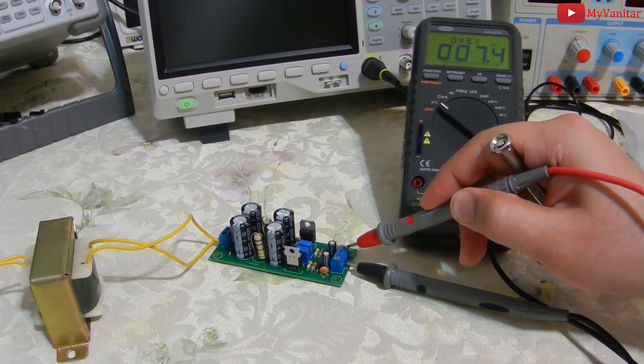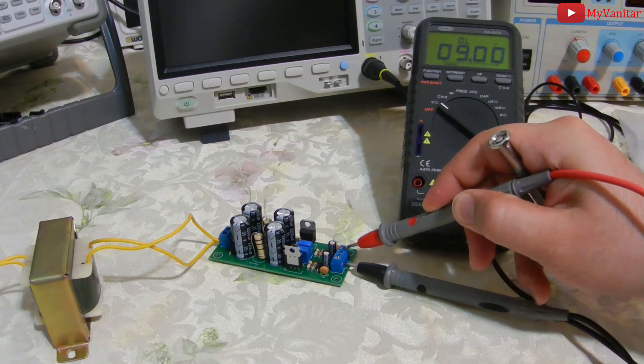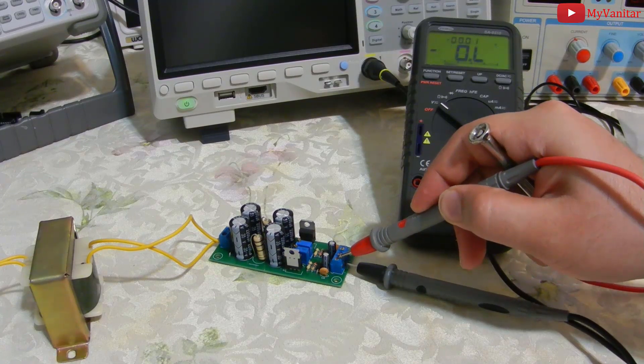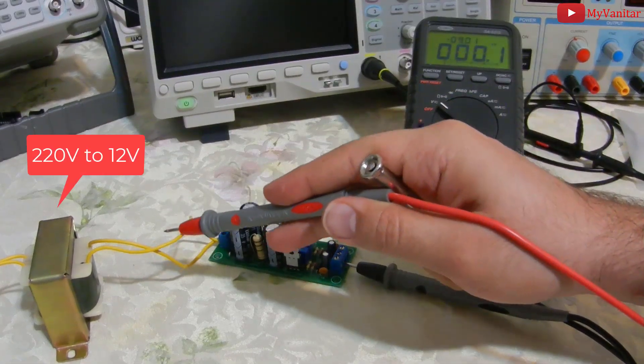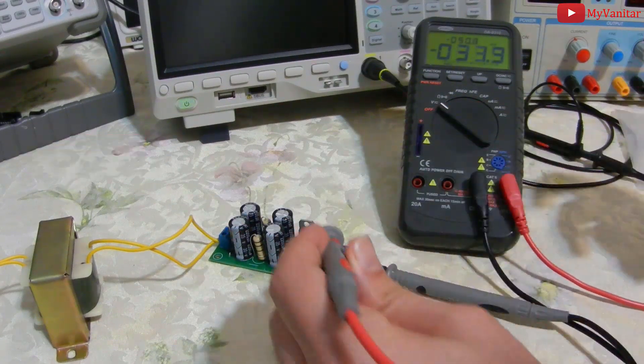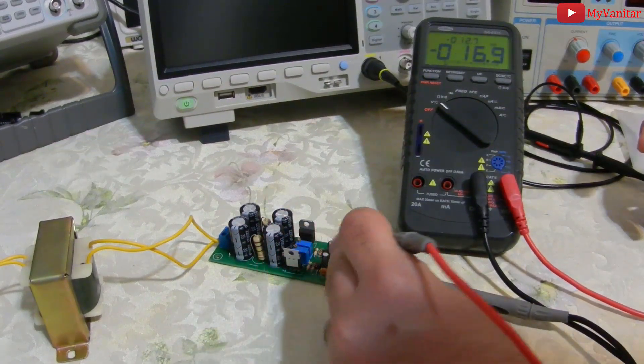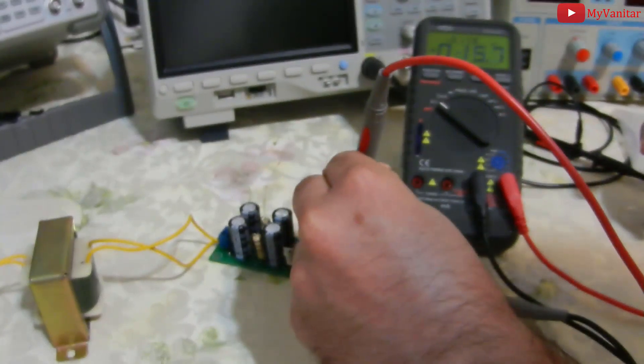For example, here I have adjusted the circuit to handle plus and minus 9 volts, and interestingly, just by using a single output transformer. Now I'm going to increase the voltage level from 9 volts to 12 volts for both positive and negative rails.